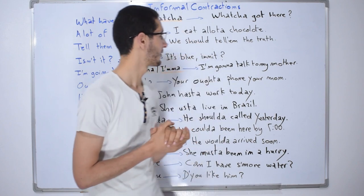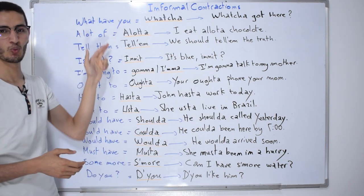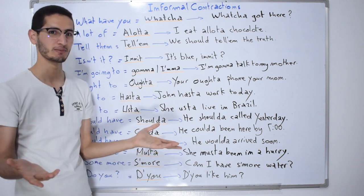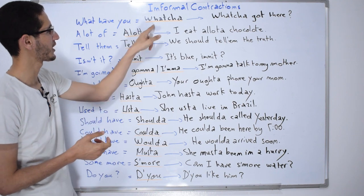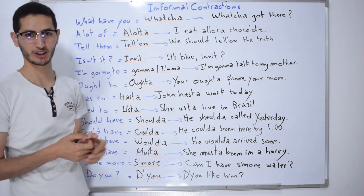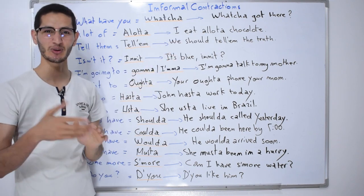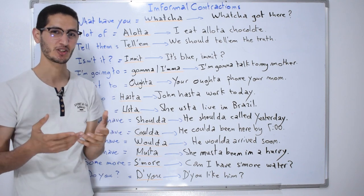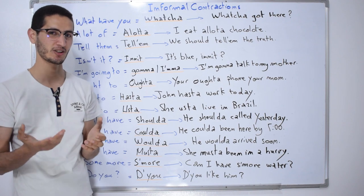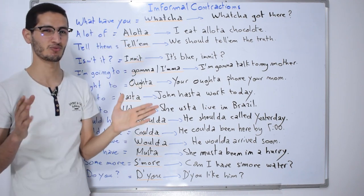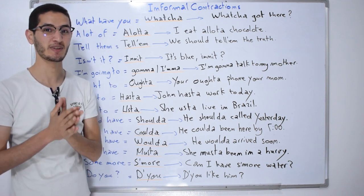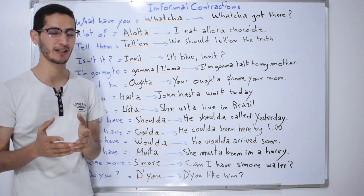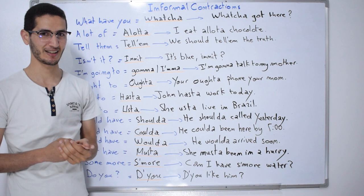The first contraction is 'what have you' — usually 'what have you got?' The informal contraction becomes 'whatcha.' For example, 'Whatcha got there?' when you want to know what someone has. It's easier, more fluent, and more fluid — not as hard to say as 'what have you got there?' Remember, these are informal contractions, so use them only in informal situations with friends or family, not in professional contexts.